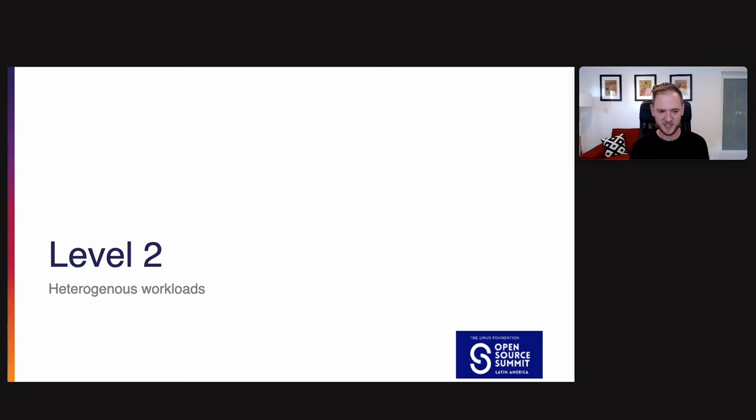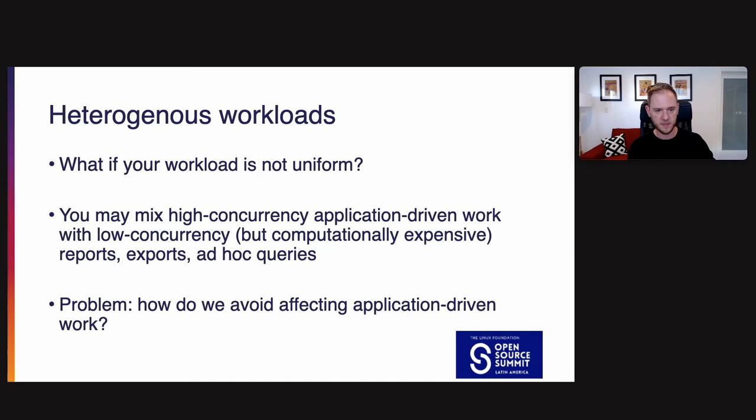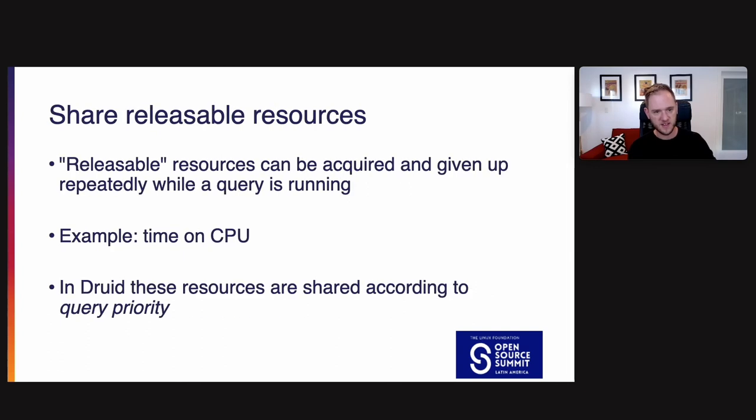Okay, now on to level two, heterogeneous workloads. So in level zero, we talked about minimizing the amount of CPU and IO required for an individual query so we can pack more queries into the same unit of time. In level one, we talked about scaling from a single server to a whole cluster without introducing new bottlenecks. And now level two, we'll talk about when you have a whole cluster, how do you run different workloads on that cluster without them interfering with each other. So the question here is what do you do if your workload is not uniform? Maybe you're mixing high concurrency app-driven work with low concurrency, but computationally expensive reports, exports, and ad hoc queries. The problem here is how do you avoid affecting application-driven work, which in most cases that app-driven work is the work you really want to be very high performance.